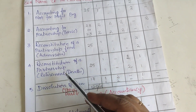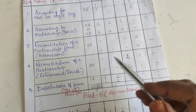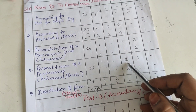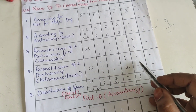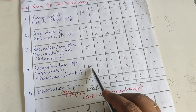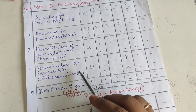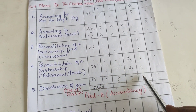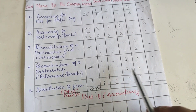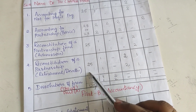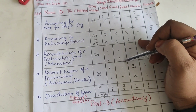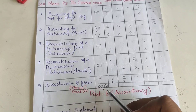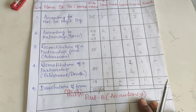The fourth chapter is Reconstitution of a Partnership — Retirement. One mark is asked, no two marks, six marks will be asked twice, and 12 mark will be asked once. You will be able to get 25 marks from this chapter. For the Dissolution of Firm chapter, one mark and two mark will be asked, and 12 marks will be asked once — overall you will be able to get 17 marks from it.